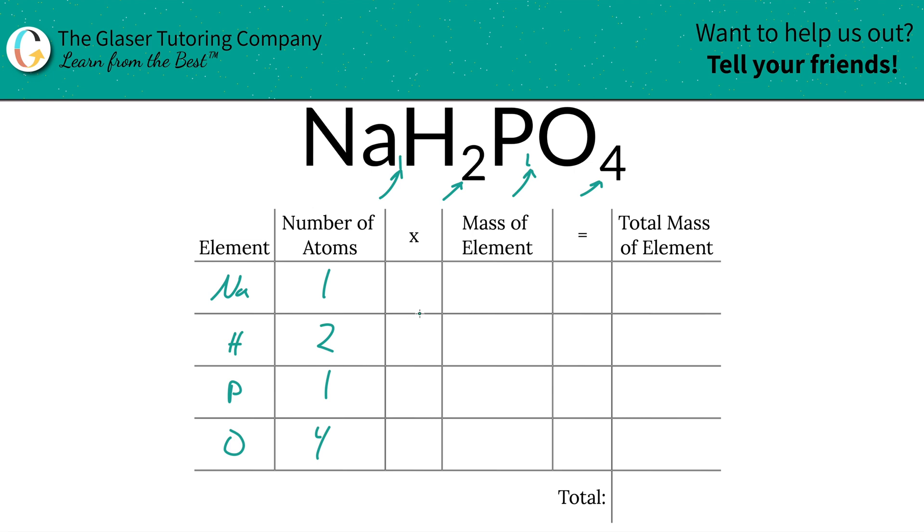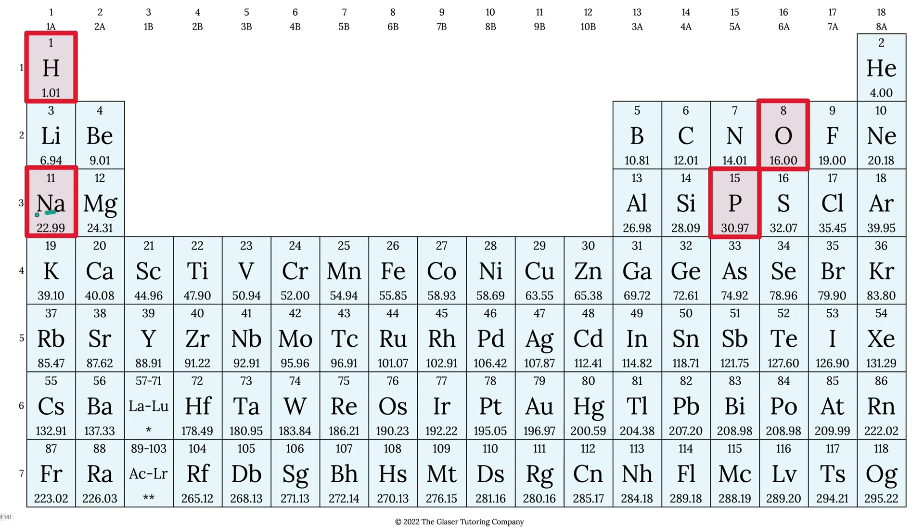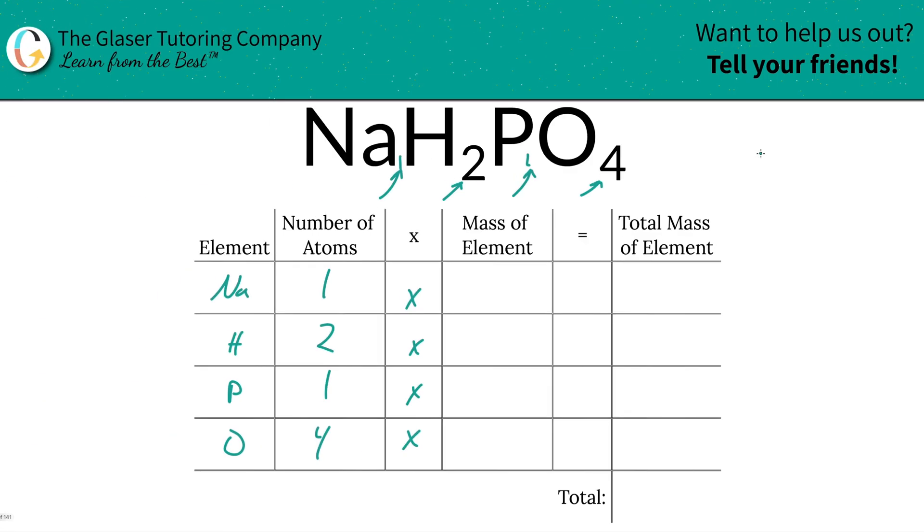And four oxygen—that's what those subscripts tell us. Then we're going to take those number of atoms and multiply it by the mass of each element. Those masses are found on the periodic table. Sodium is 22.99, hydrogen is 1.01, phosphorus is 30.97, and oxygen is 16. So those are the masses we're going to write in: 22.99, 1.01, 30.97, and then 16.